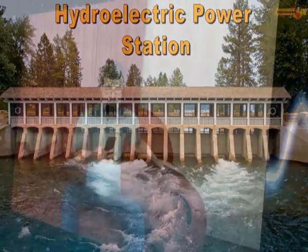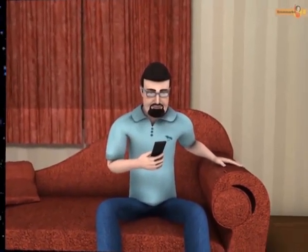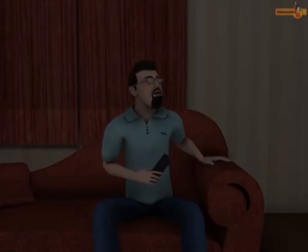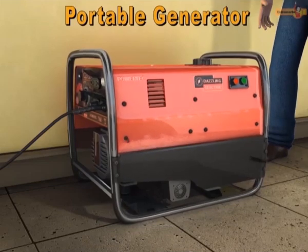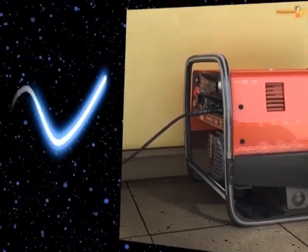However, an AC generator can also be seen at home, which is used during power outages to keep the appliances like fans, refrigerators, etc. working until power is restored. Let us understand how an AC generator produces electricity.